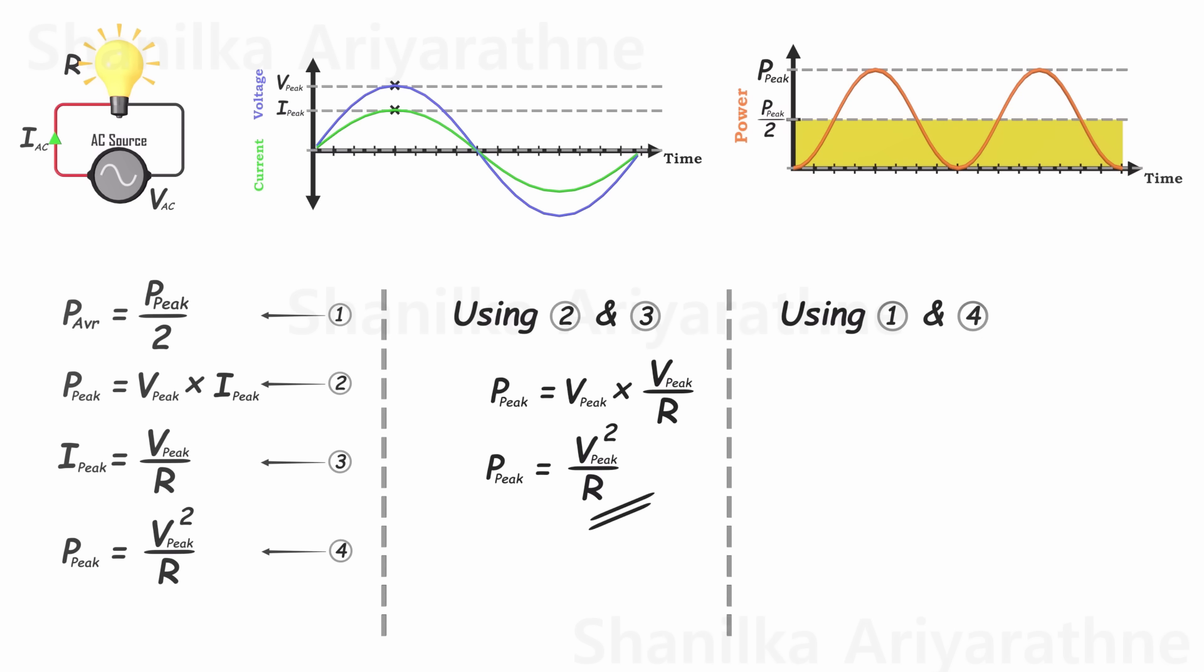Subsequently, utilizing equations 1 and 4, we can formulate the expression for average power using voltage and resistance. The average power of an AC power circuit is equivalent to the squared peak voltage divided by twice the resistance.